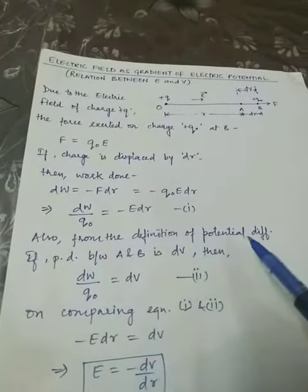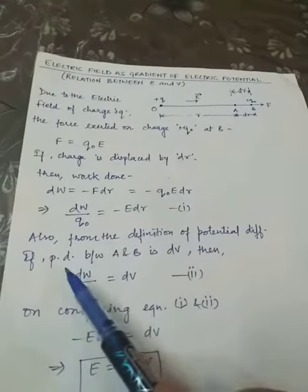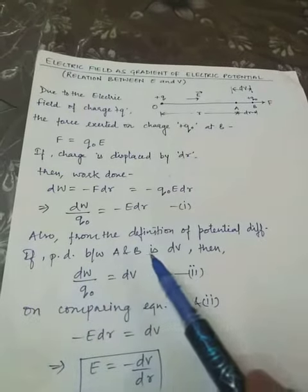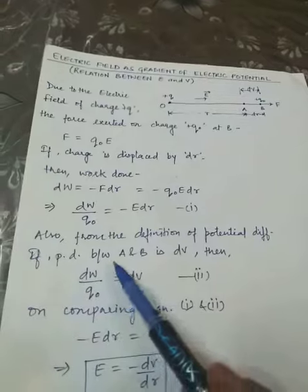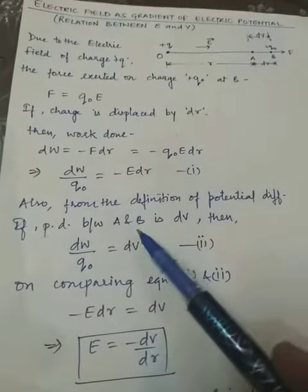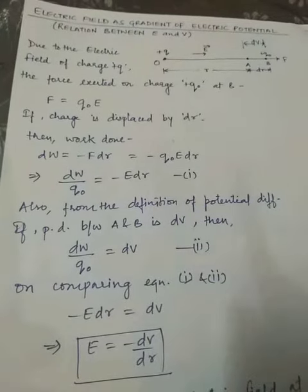From the definition of electric potential difference, if the potential difference between A and B is DV, then we can write the formula DW upon Q0 equals DV. Let it be equation number two.